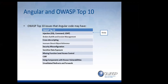Indirect object references are more of a server-side issue. Security misconfiguration is definitely a problem because Angular allows you to configure things, and you can do client-side routing wrong or turn off security features. Sensitive data exposure is also definitely a problem — there's this idea of implicit client-side trust. You might think you're returning only the user's name, but when building things like MongoDB with Express, sometimes the entire user object gets returned and stored in local storage.